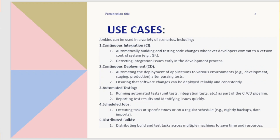Jenkins can be used in a variety of scenarios, including continuous integration (CI): automatically building and testing code changes whenever developers commit to a version control system, e.g. Git, detecting integration issues early in the development process.